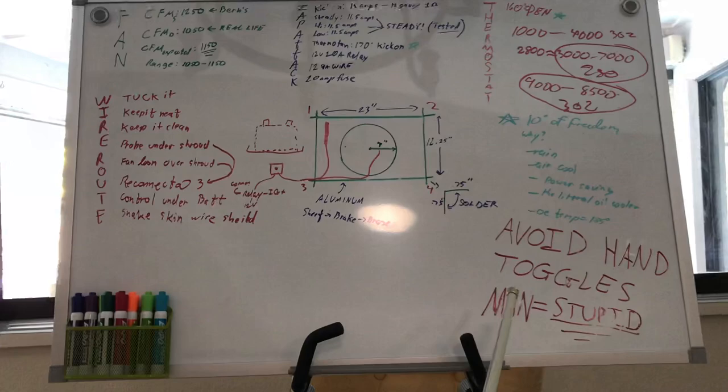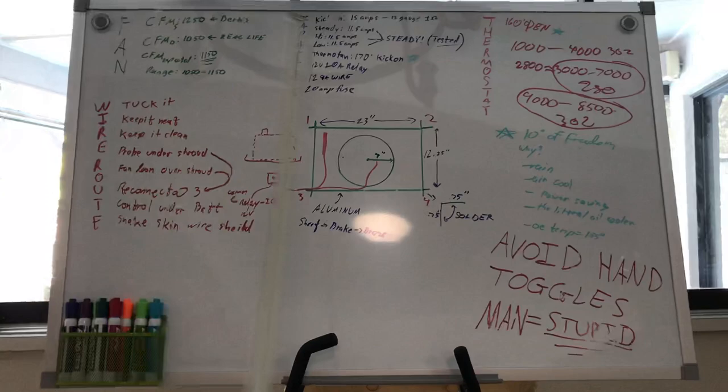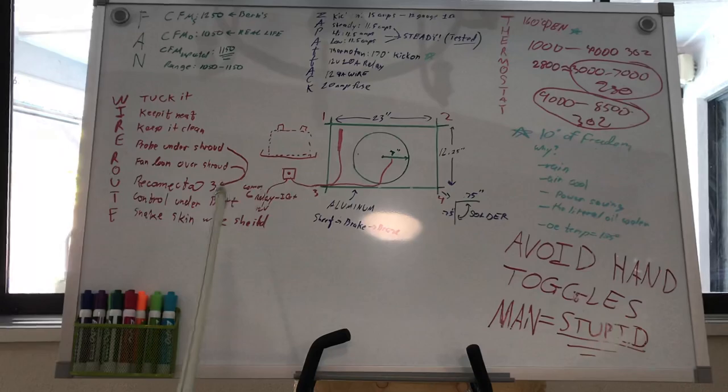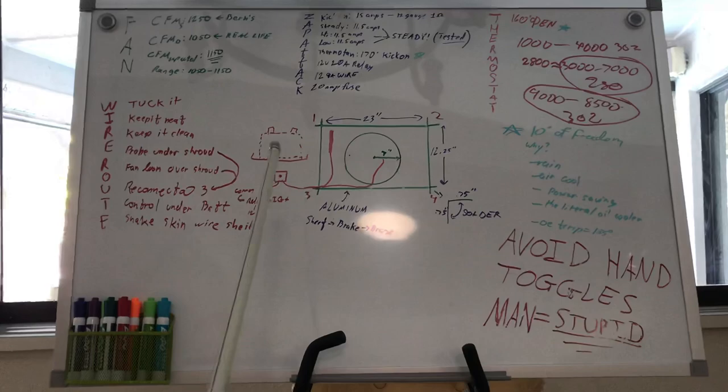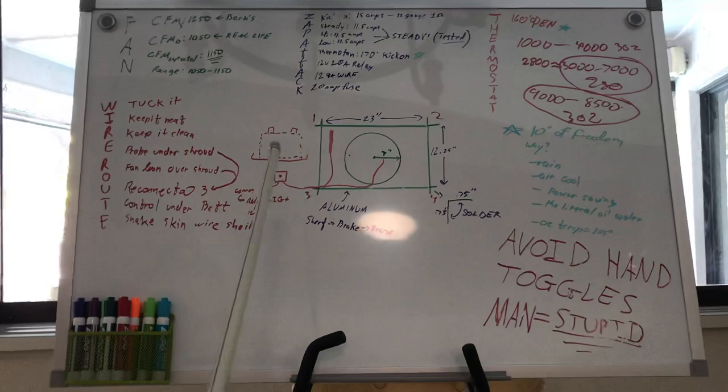And a big note here is to avoid hand toggles, because man is stupid. At some point in time you may forget to turn on the fan if you have it on a switch, or maybe a switch just has it on direct so now you're using your fan even when you don't need to. So if you can avoid a switch, you don't need a switch. You can do it without a switch.